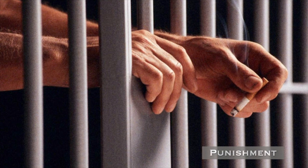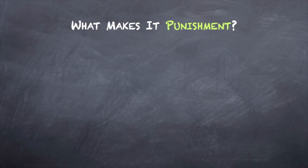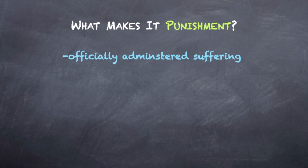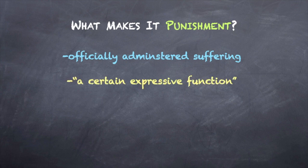That answer raises yet another question: what do we mean by punishment? Or, more to the point, what is distinctive about criminal punishment? First, a punishment is not a criminal punishment unless it is administered by a government agent following some duly authorized procedure. A lynch mob can punish, but it cannot administer criminal punishment. We can say that punishment is officially administered suffering. This raises another question: how does punishment differ from a tax or a fee? These are officially administered and unwelcome because they hurt us in the pocketbook.